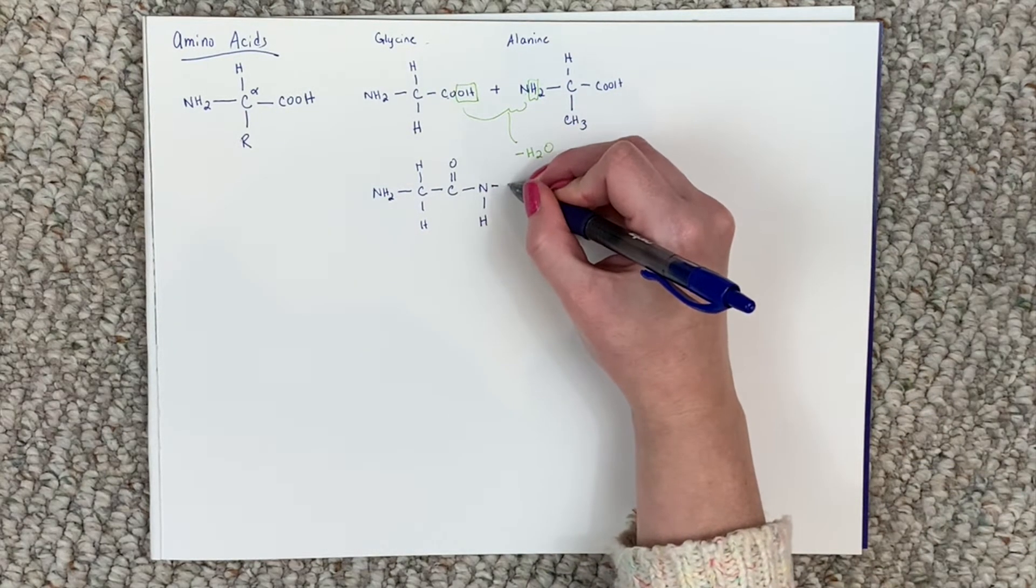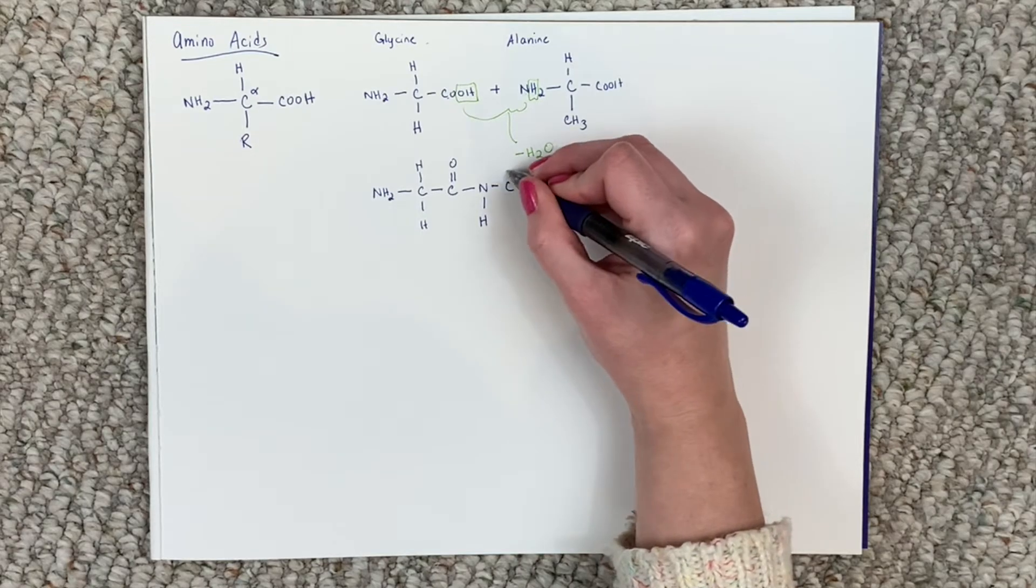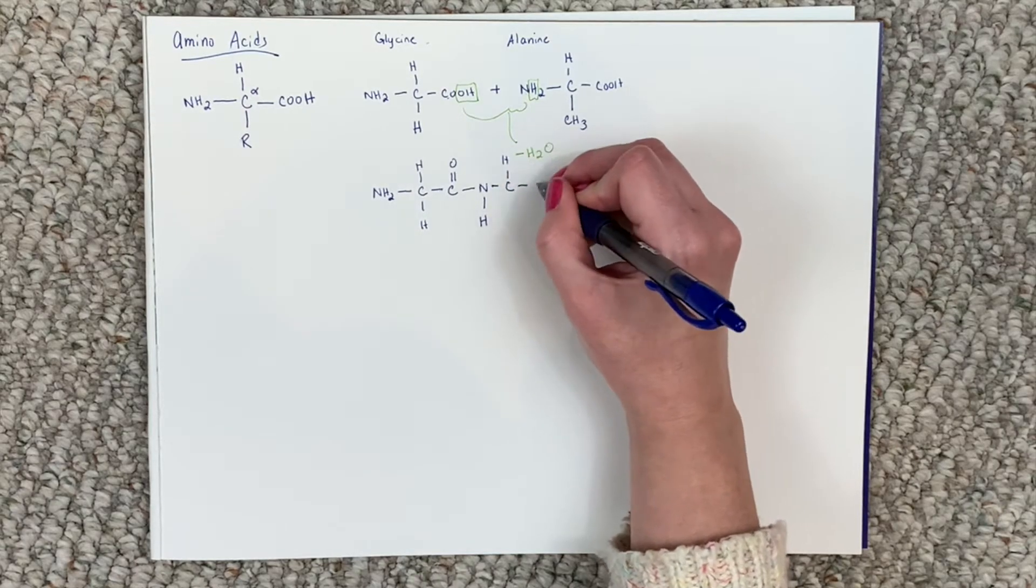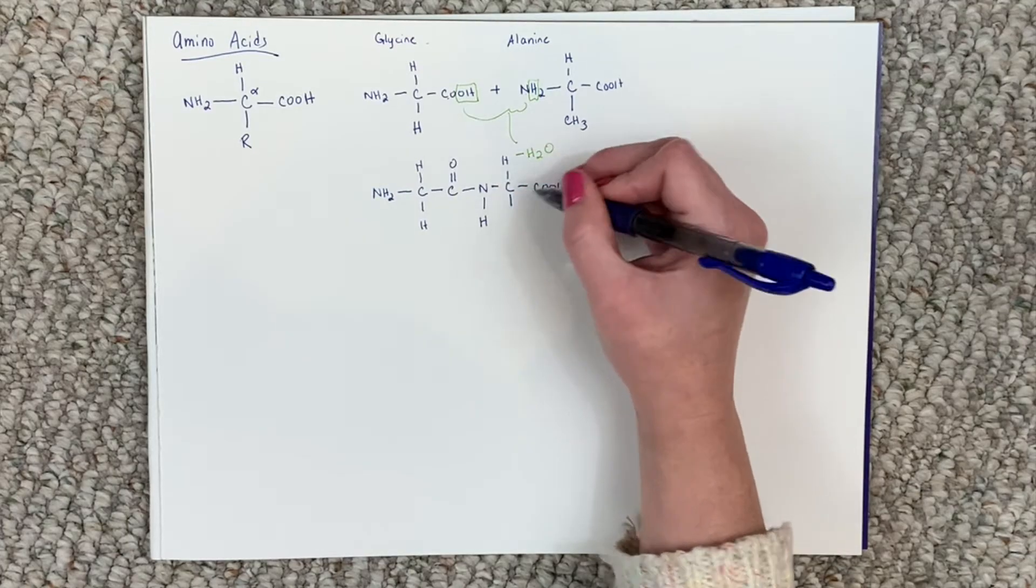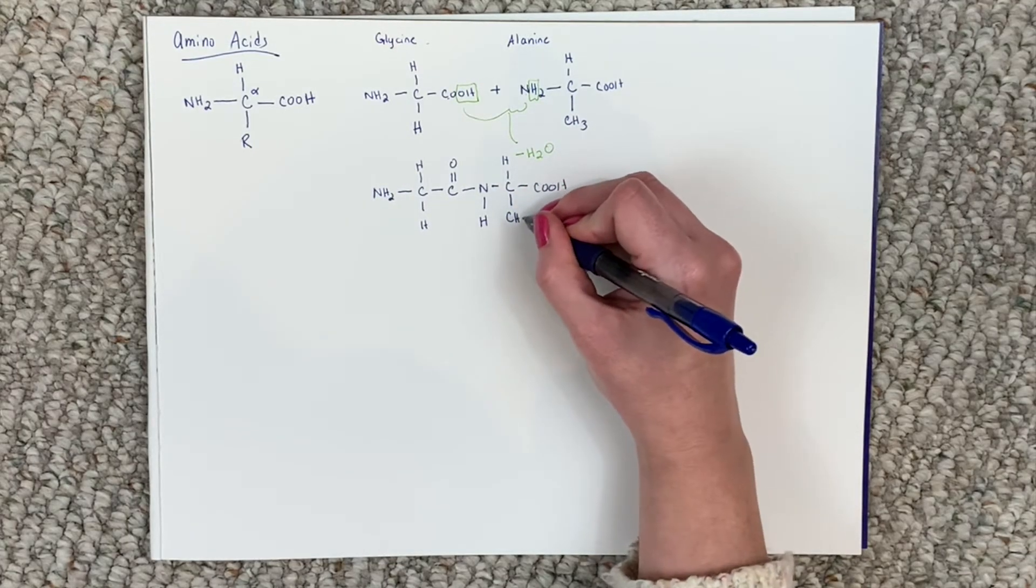Keep going to your carbon, which has an H, our carboxylic acid group in alanine, this is alanine right here. Its R group is CH3.